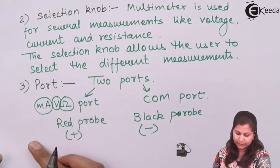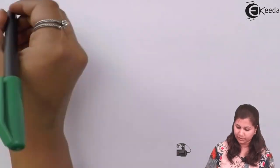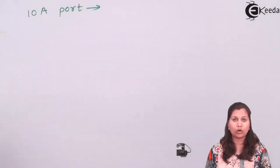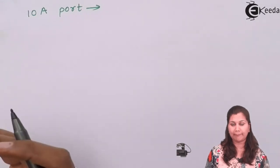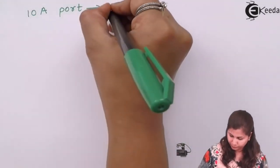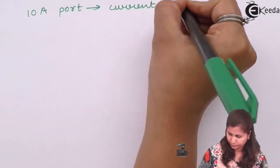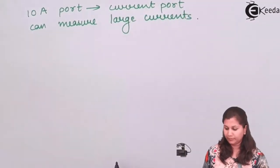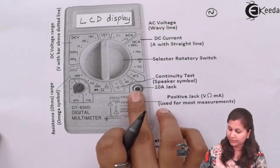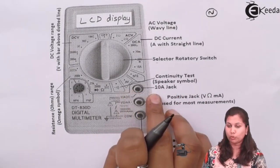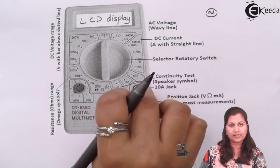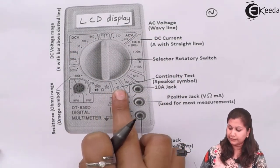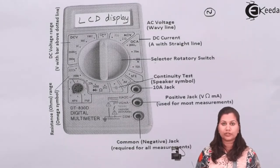In this multimeter we are also having a 10-ampere port. So if we want to measure current in the range greater than 10 amperes, we can use this port. Whenever we want to measure large currents, we can connect the probe into this 10-ampere jack. We also have a continuity test. So these are the different parts of the digital multimeter.